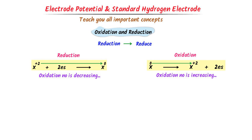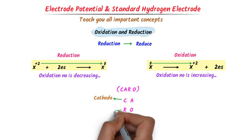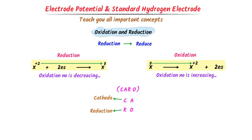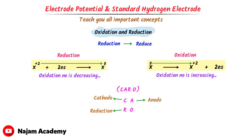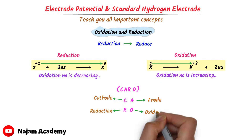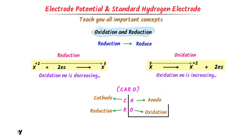Here, let me teach you one of my personal tricks. I always write CAR-O. The C stands for Cathode and R stands for Reduction, so cathode is an electrode where reduction occurs. The A stands for Anode and O stands for Oxidation, so anode is an electrode where oxidation occurs. Just remember this CAR-O trick which will help you in electrochemistry.